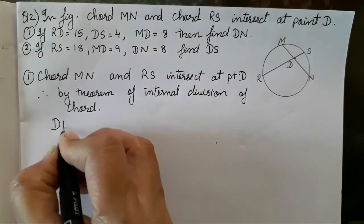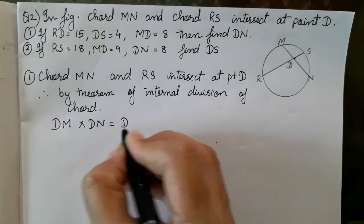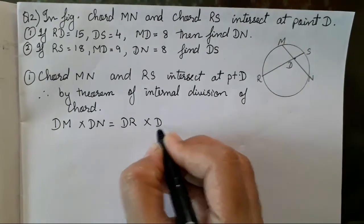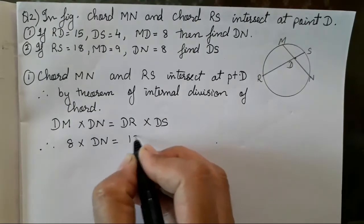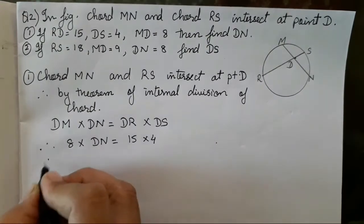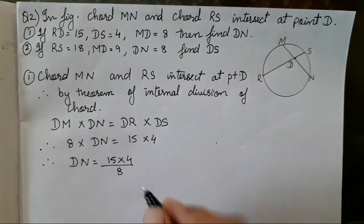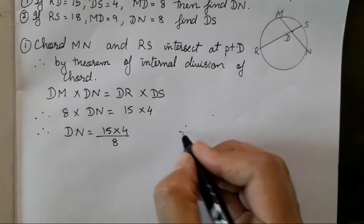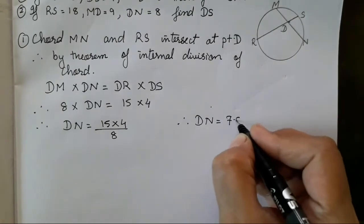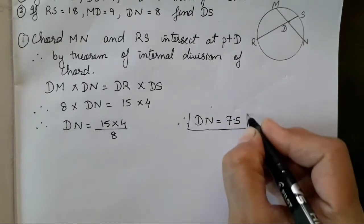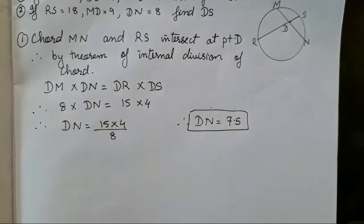Observe the figure and decide which theorem to use. Directly apply: DM × DN = DR × DS. Substituting: 8 × DN = 15 × 4. Therefore DN = 15 × 4 upon 8. Therefore DN is equal to 7.5. So we have got the first answer using the theorem of internal division of chords.